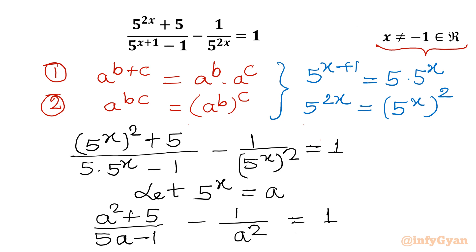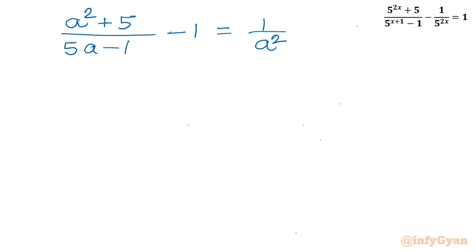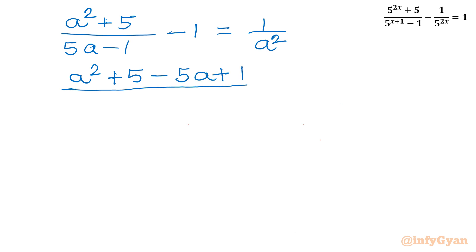I will take 1 over a square to the right side, and the 1 on the right I will take to the left. So we get: a square plus 5 over 5a minus 1, minus 1, equal to 1 over a square. Now taking LCM on the left-hand side: a square plus 5 minus 5a plus 1, divided by 5a minus 1, equal to 1 over a square.